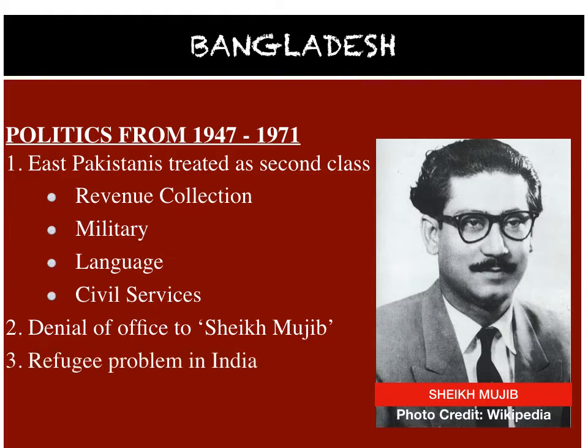Then there was the refugee problem in India. Pakistan at that time was under General Yaya Khan. In the process to suppress the protests, thousands of people were killed, leading to huge migration into India — about 80 lakh people fled into India from East Pakistan, giving India a huge refugee problem. India's effort to persuade Pakistan to stop this massacre also failed, so India supported the demand of freedom by the people of East Pakistan by extending financial and military support.